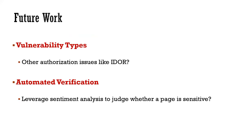There are some future directions worth exploring. First of all, the types of identified vulnerabilities can be extended — there are other authorization issues such as insecure direct object reference. Second, the manual verification procedures can be improved with automated techniques, for instance leveraging sentiment analysis to determine whether a page is sensitive or involves device setting operations.